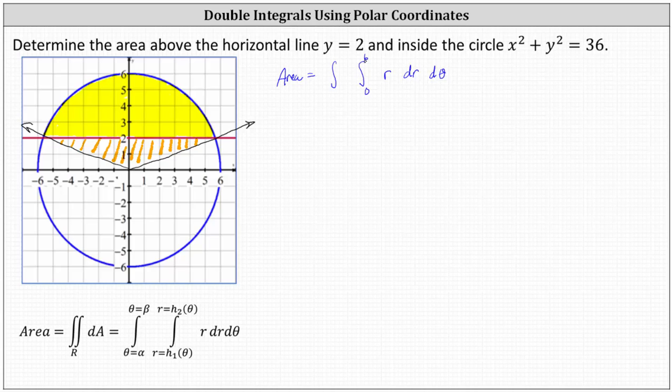And that's where we're going to determine the limits of integration for theta. The lower limit is going to be this angle here, where if we form a right triangle, this leg has a length of two units. The hypotenuse has a length of six units because of the radius of the circle.